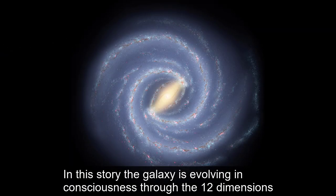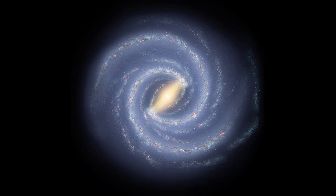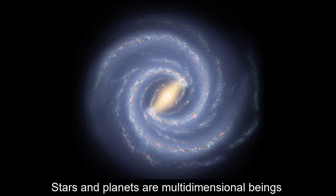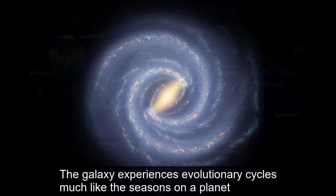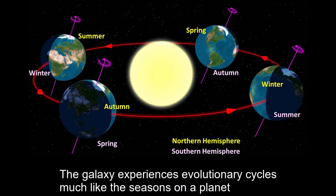In this story, the galaxy is evolving in consciousness through the 12 dimensions. Stars and planets are multi-dimensional beings. The galaxy experiences evolutionary cycles, much like the seasons on a planet.